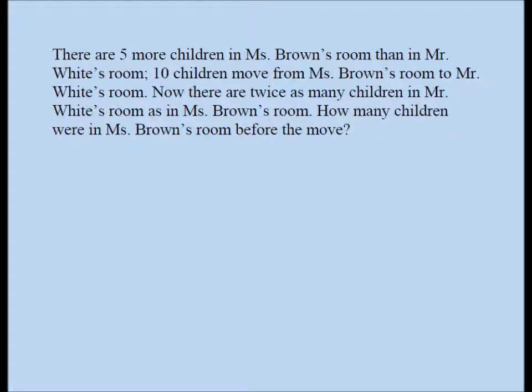There are five more children in Ms. Brown's room than in Mr. White's room. Ten children move from Ms. Brown's room to Mr. White's room. Now there are twice as many children in Mr. White's room as in Ms. Brown's room. How many children were in Ms. Brown's room before the move?